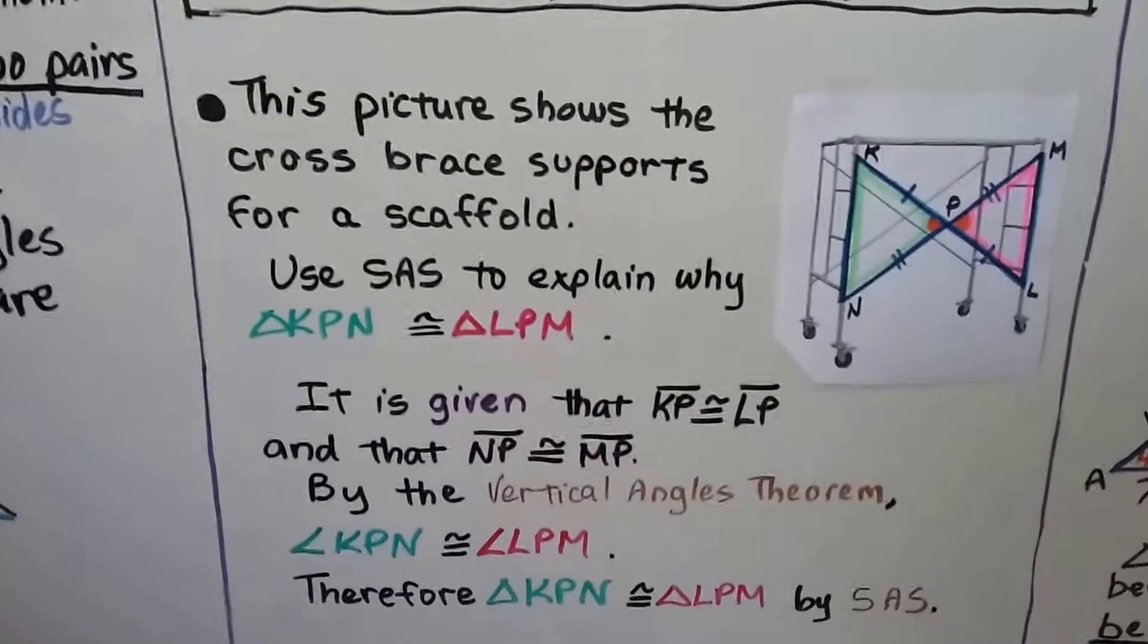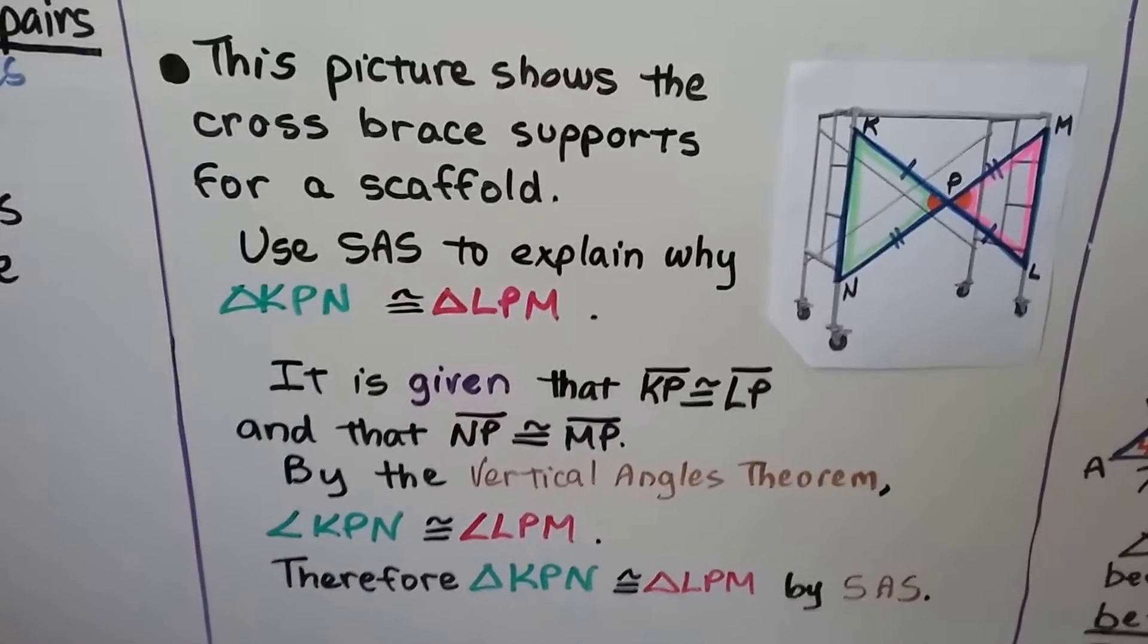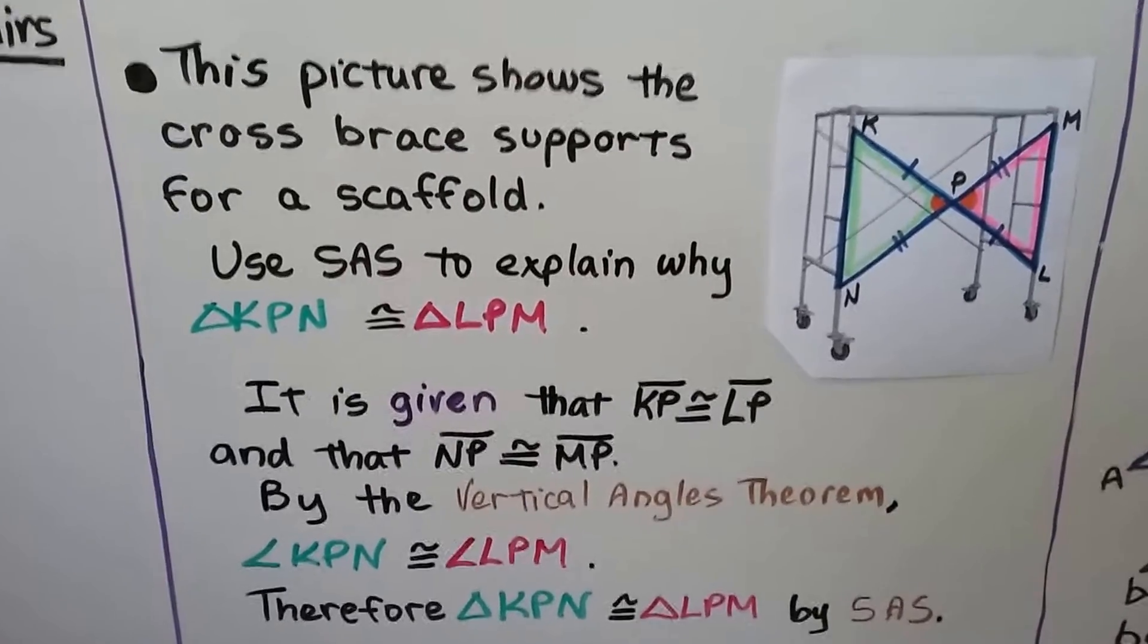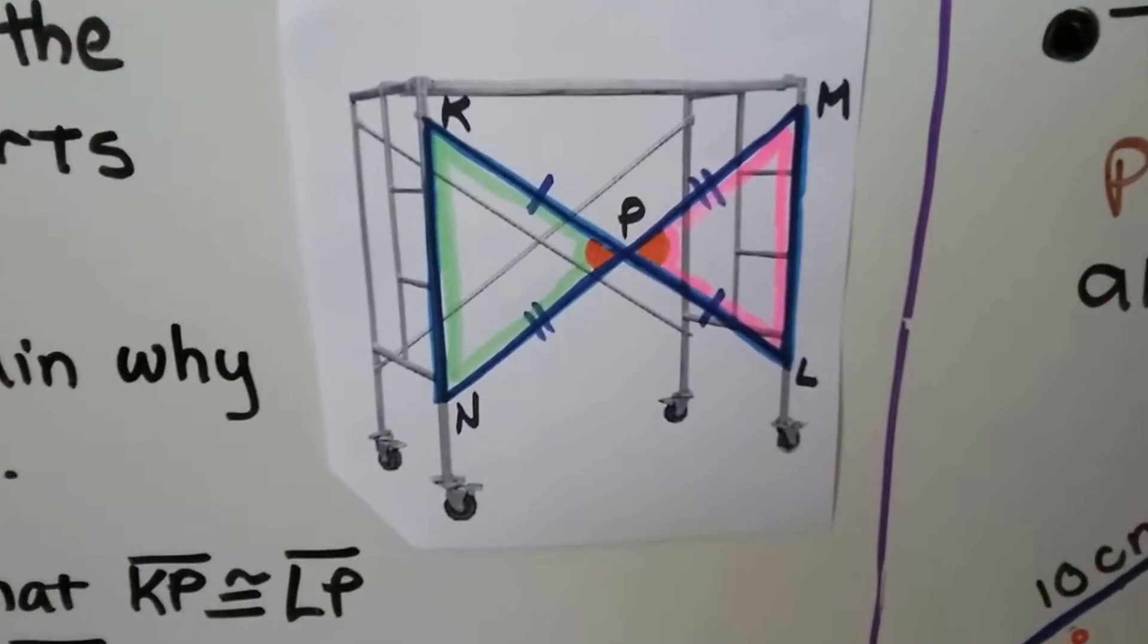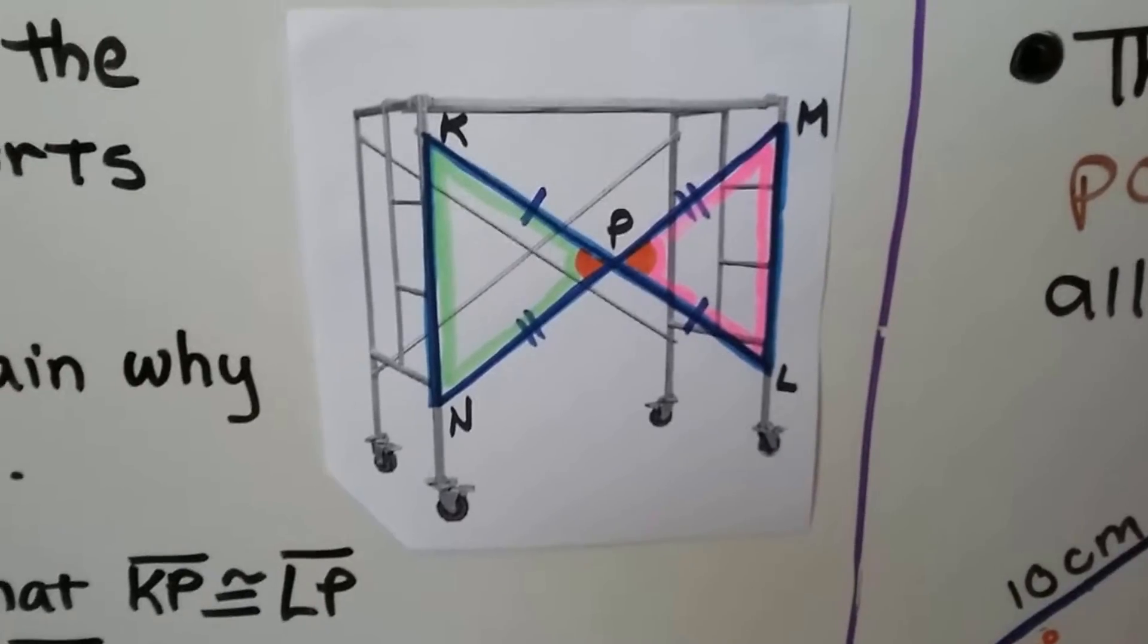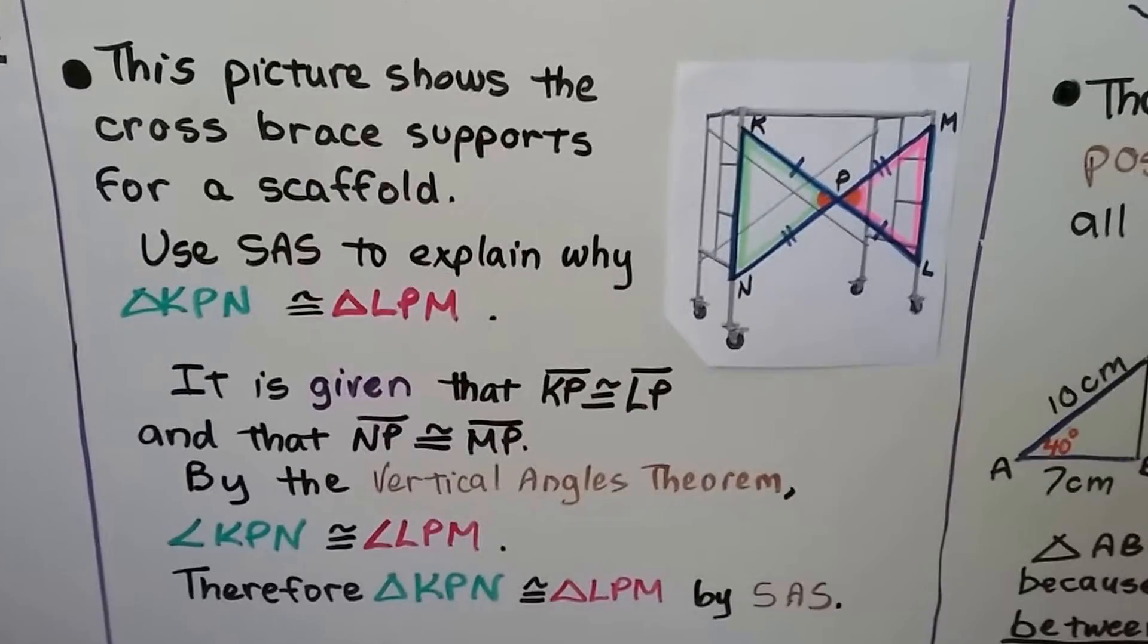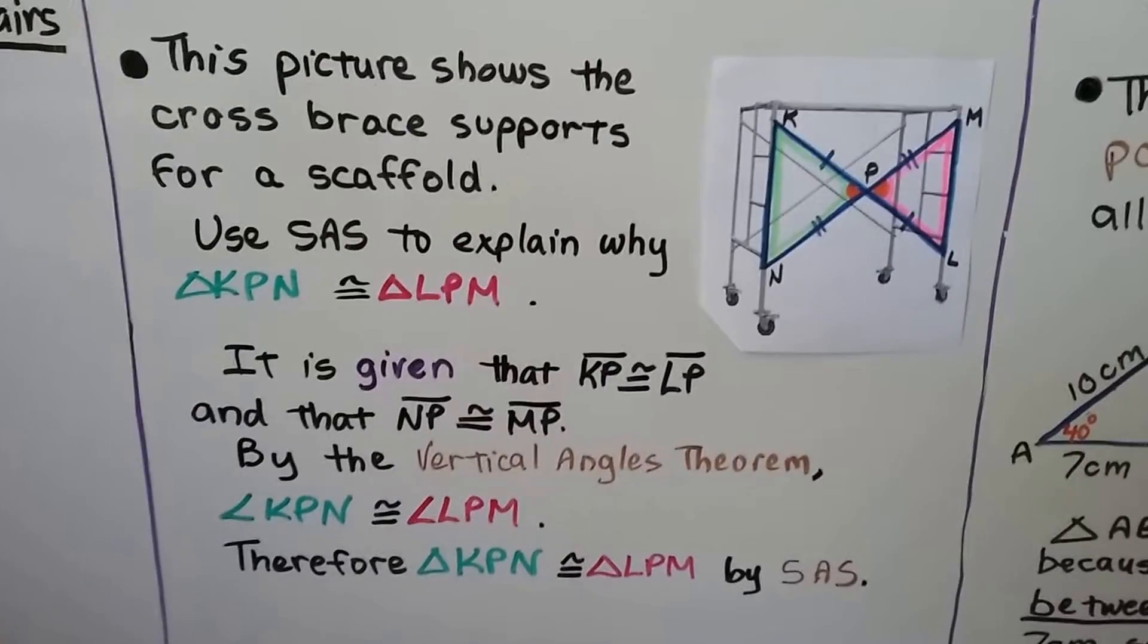This picture shows the cross brace supports for a scaffold. We take a closer look at the scaffold and we can see the congruent segments. They both share P. It's given that segment KP is congruent to LP - we see that one congruent mark. And segment NP is congruent to segment MP - we can see the two congruent marks.